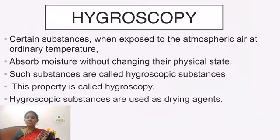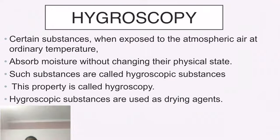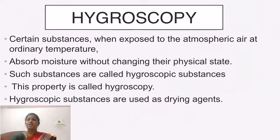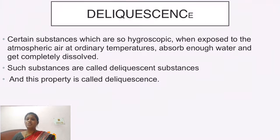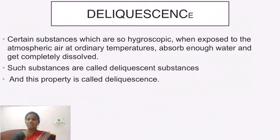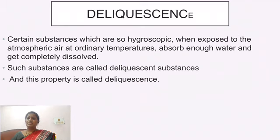Hygroscopic substances are those that, when exposed to the atmosphere, gain moisture without changing their physical state — you can see some moisture in the salts. Deliquescent substances, when exposed to the atmosphere, also gain water molecules from the atmosphere, but they dissolve in those water molecules and their physical state changes — from solid salt to liquid. Such substances are called deliquescent substances.